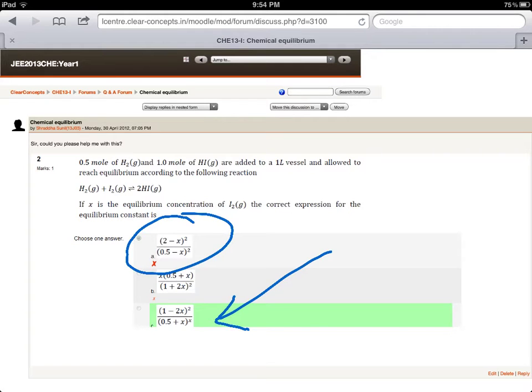Alright so here we go. Important point to note: the vessel is 1 litre so you don't really need to consider the denominator. When you talk about concentrations, that's always moles per litre, and here the volume itself is 1 litre, so you can work with just moles because the denominator is always one.